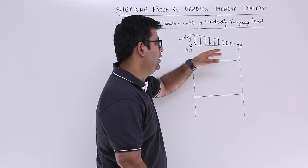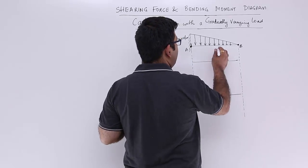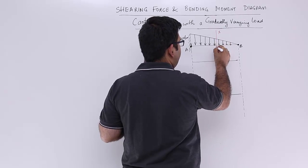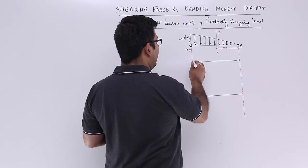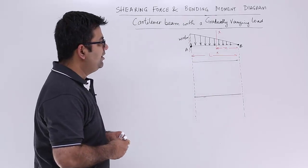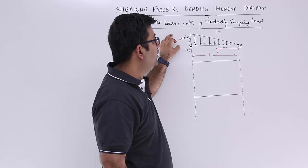Again let us consider a section XX at a distance X from point B. The entire span of the beam is capital L. If at point A the load is W, at point B the load is 0.